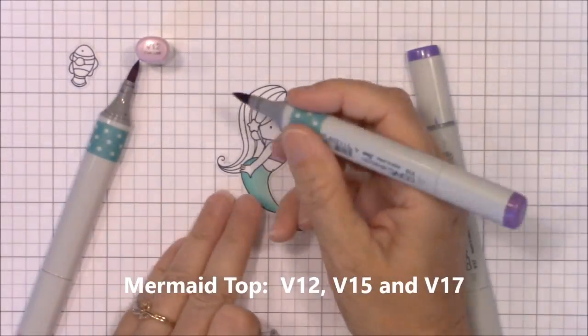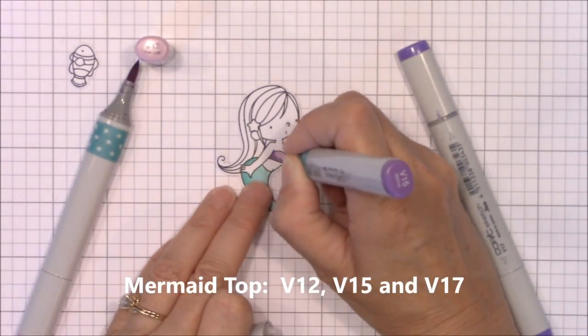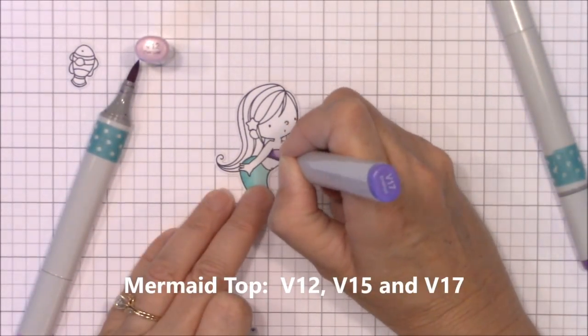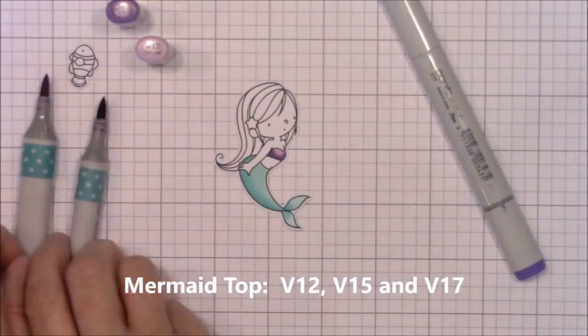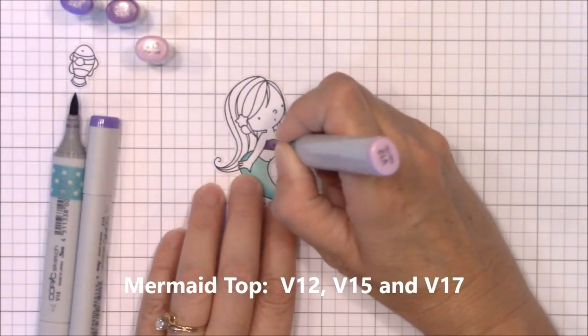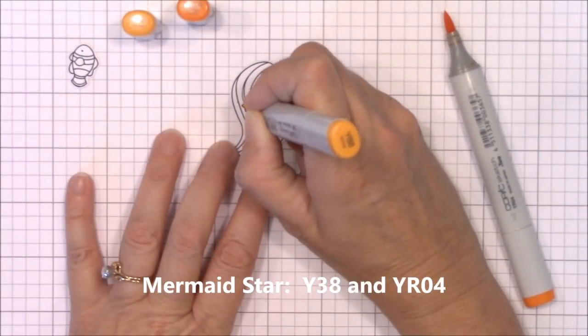For her top I used V12, V15, and V17. For the star in her hair I used Y38 and YR04 and I used the same colors along with 100 for the clownfish.